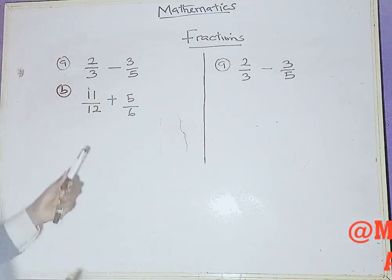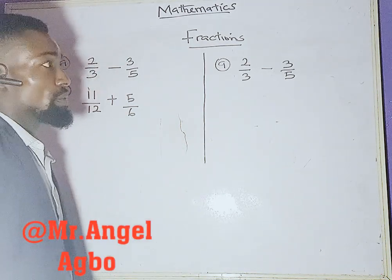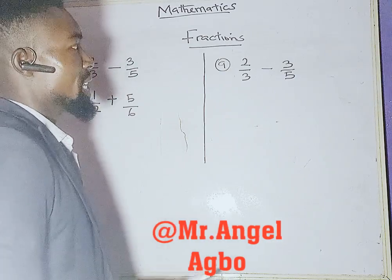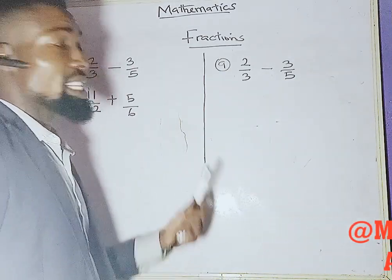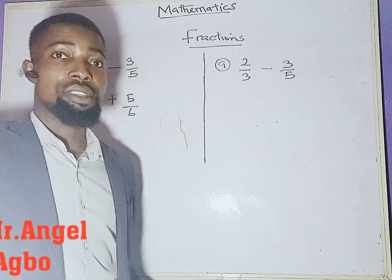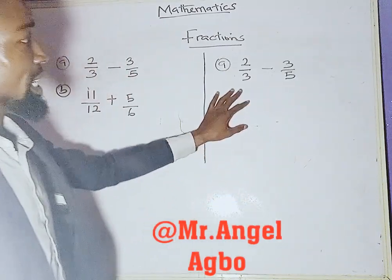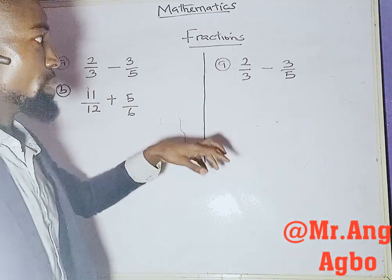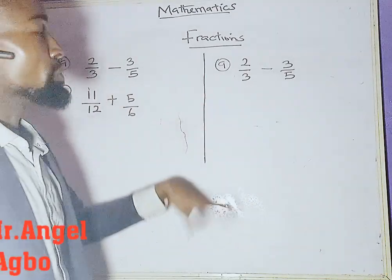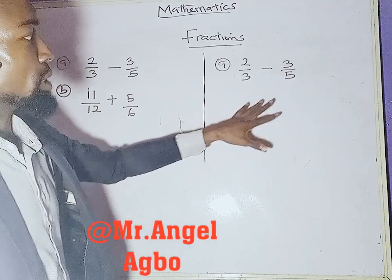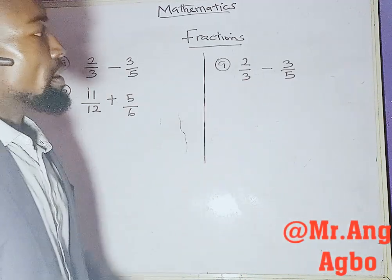Let's start from the first one: 2 divided by 3 minus 3 divided by 5. One thing I want you to understand is when you have a fraction like this, the first thing that comes to your mind is the LCM — the lowest common multiple — a number that can divide the denominators without remainder. The denominators are 3 and 5, and the number that can divide them without remainder is 15.